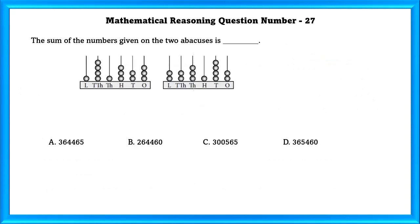Mathematical reasoning question number 27: The sum of the numbers given on the two abacuses is 3,064,465.